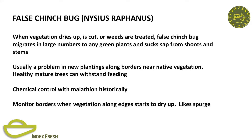False chinch bug: when vegetation dries up or is cut, or the weeds are treated, the insect migrates in large numbers—you can look at the ground and it looks like it's moving. Usually a problem in new plantings; healthy trees can withstand the attack. Historically chemical control was done with malathion. I've only treated chinch bug once back in the 90s—until last week when I had to treat it for the second time. Monitor the borders with the vegetation; it likes spurge.